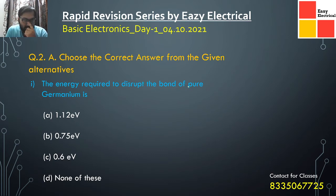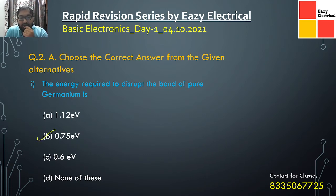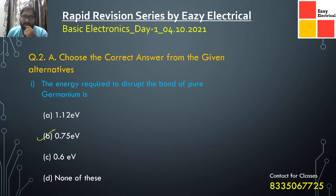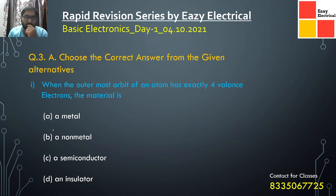Next question: what is the energy required to disrupt the bond of pure germanium? The answer is 0.75 volts. This is a short question asked in almost every examination — you must remember that 0.75 volt is the bond disruption energy for germanium.